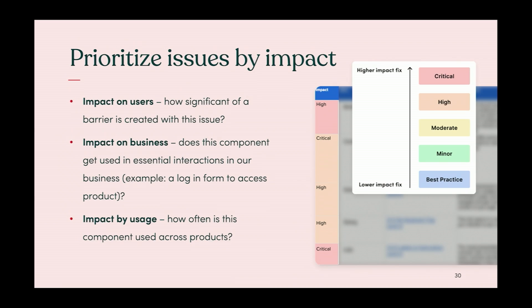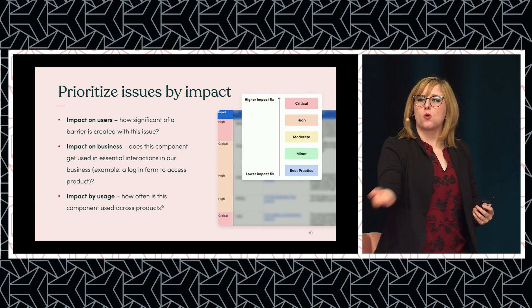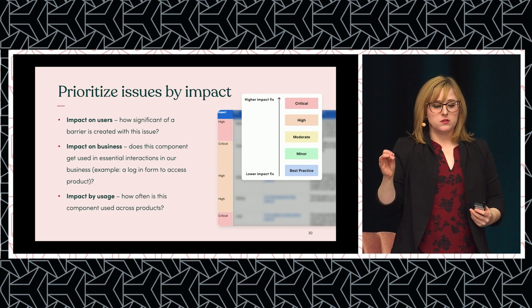I also recommend prioritizing issues by impact: what's the impact on users — what barriers are created when we forget accessibility in this component? What's the impact on business — are we using these components in essential interactions like login, where a barrier blocks access to our product? And impact by usage — how often is this component used across our products?